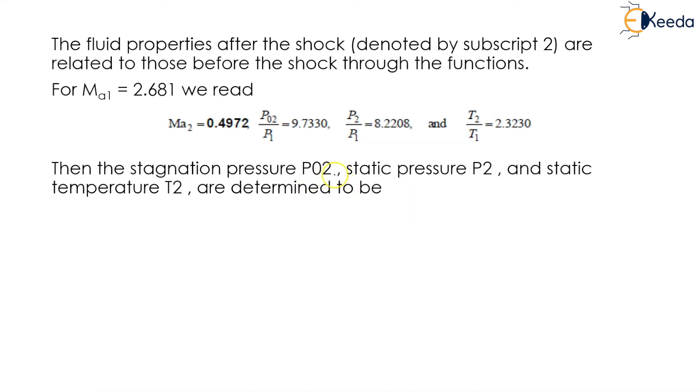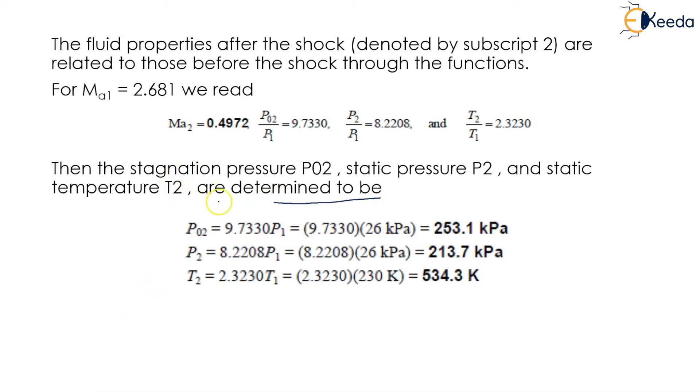The stagnation pressure P02 and P2 are determined to be P02 = 9.733 × P1, which equals 9.733 × 26 = 253.1 kilopascal.